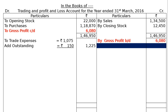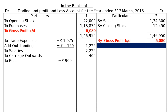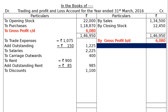The total for trade expenses is rupees 1,225. Next: Salaries rupees 2,225; Carriage Outwards rupees 4,000; To Rent rupees 900, plus outstanding rent from the adjustment rupees 85, totalling rupees 985 in the final column. This outstanding rent will be shown under Current Liabilities in the liability side of the Balance Sheet. Next is debit Discounts rupees 1,100.